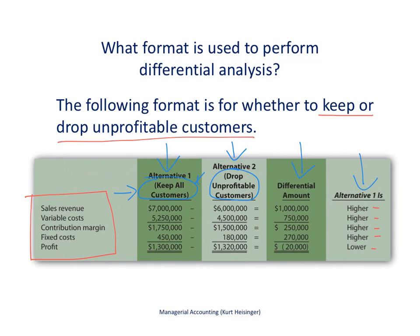We're looking at each of these alternatives and the profit associated with each. Alternative one has a profit of $1,300,000 and alternative two has a profit of $1,320,000. Therefore alternative two is the best — alternative one has lower profit by $20,000. Take a look at the videos that show this type of analysis in detail; this is just to give you a sense of what differential analysis looks like.